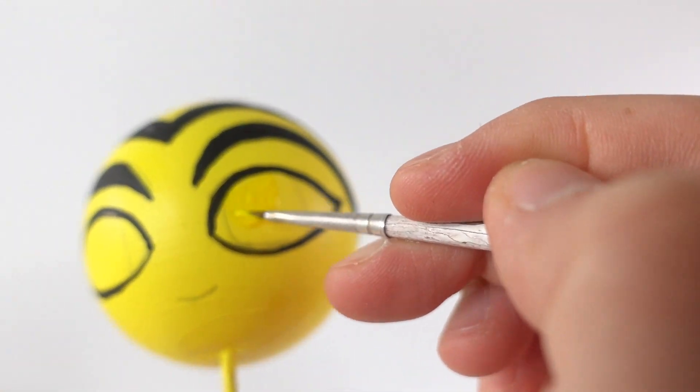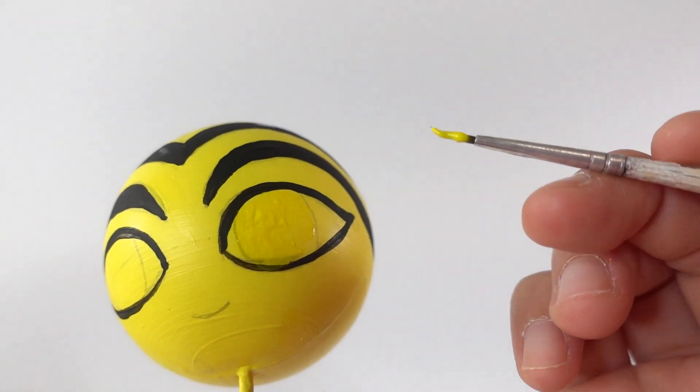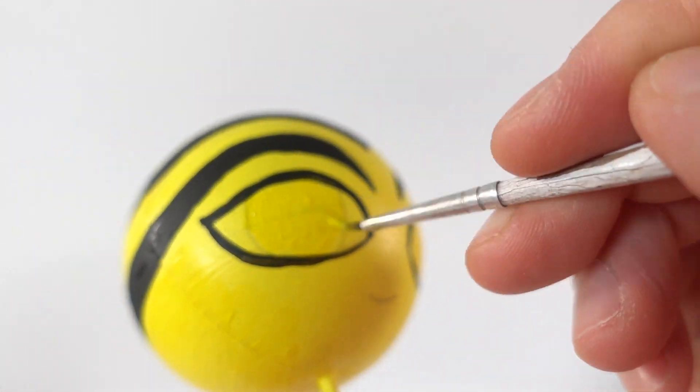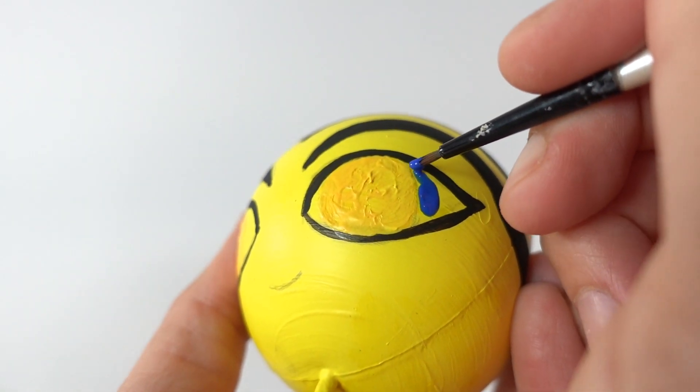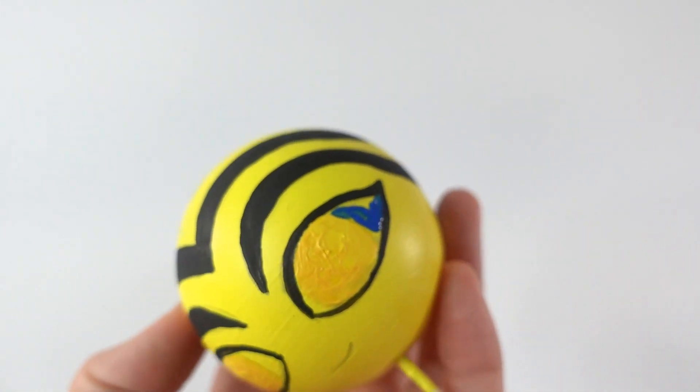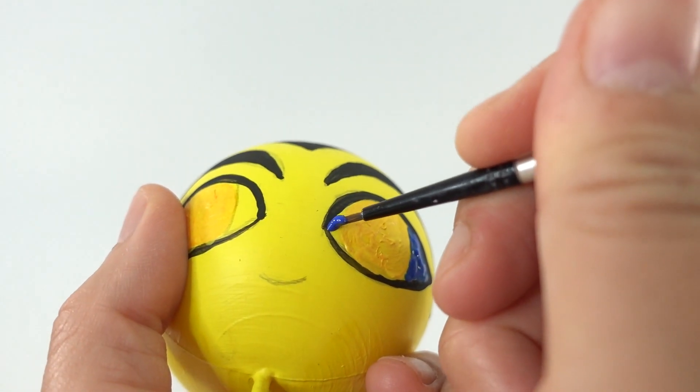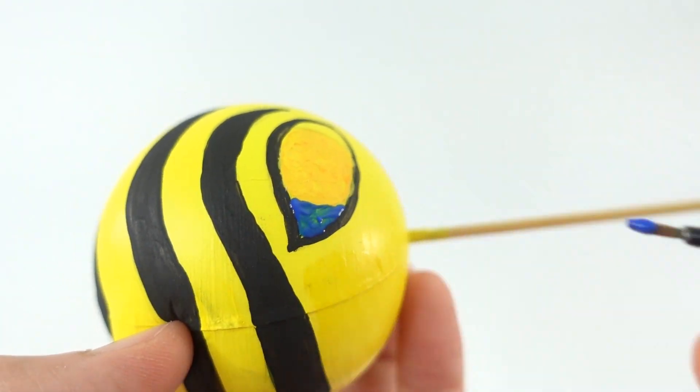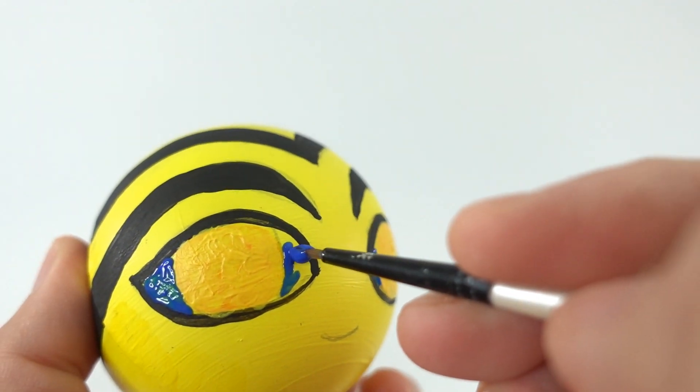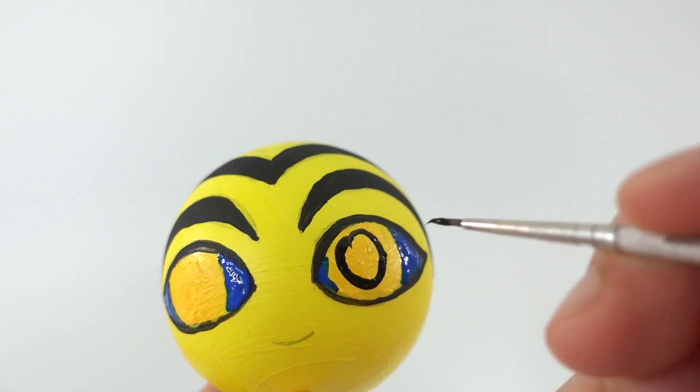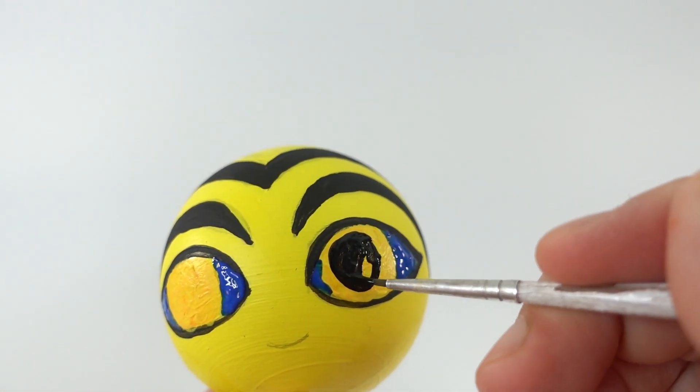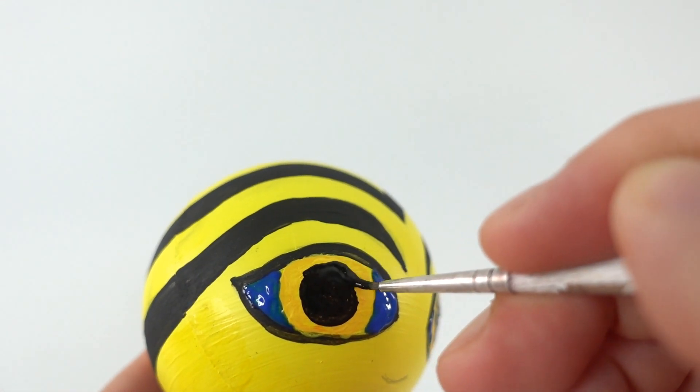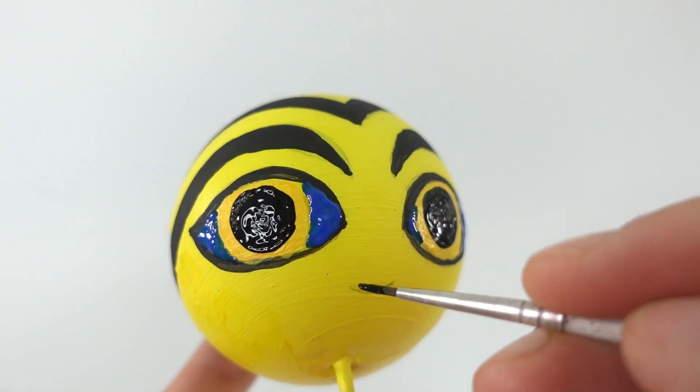We're going to color in the eyes with dark yellow. Add blue around the irises instead of white. And then color in the black pupils. And here we have a small smile.